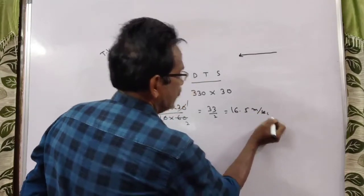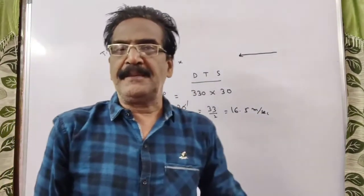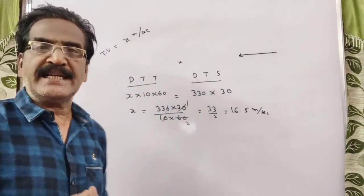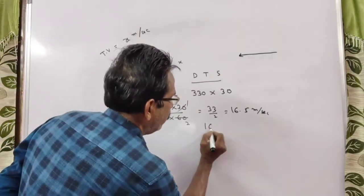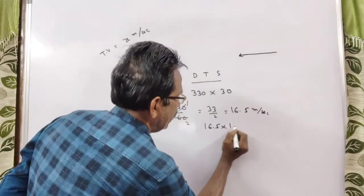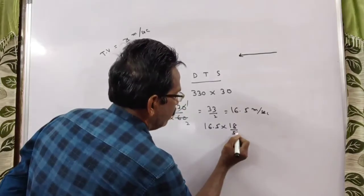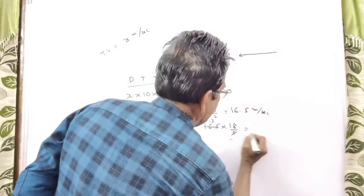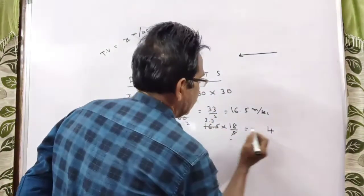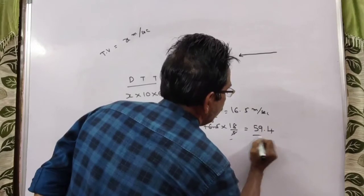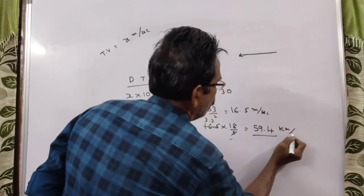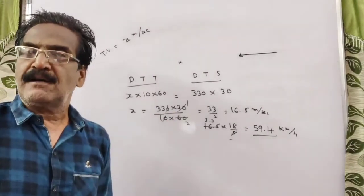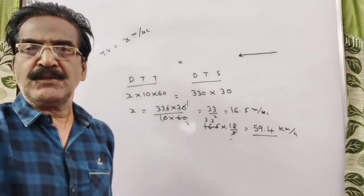This is 16.5 meters per second. If you multiply by 18 by 5, you will get the velocity in kmph. 16.5 into 18 by 5: 5 threes are 15, 18 threes are 54, plus 5 gives 59 — that is 59.4 kmph. That is the speed of the train. Okay friends, thank you, have a nice day.